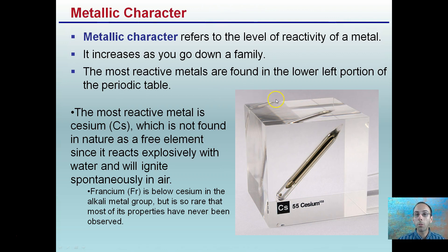Metallic character refers to the level of reactivity of a metal. It increases as you go down a family. The most reactive metals are found in the lower left portion of the periodic table. So if you have a periodic table, take a look at it. You want to find cesium, which is going to be in that lower left-hand portion.